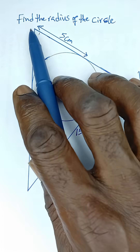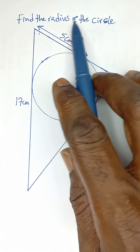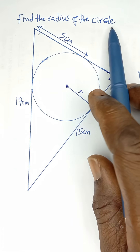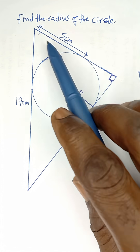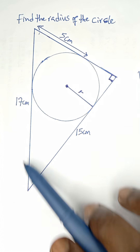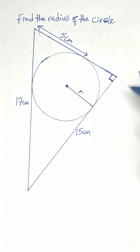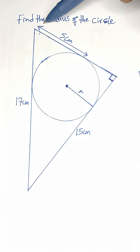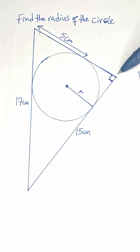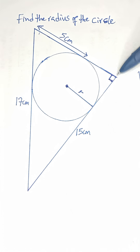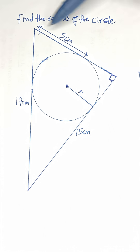The question asks us to find the radius of the circle. Looking at the full triangle first, let's take the length of this part as y — from here to this place is the full length y, and we're only given here to this place as 5.